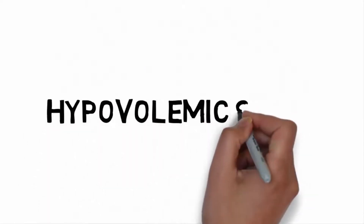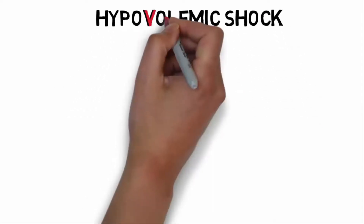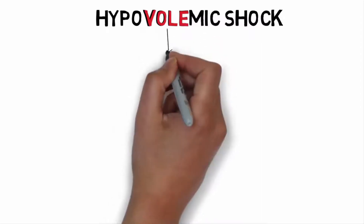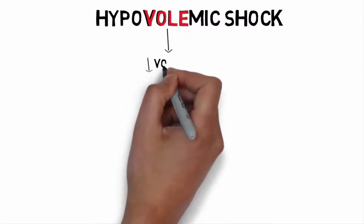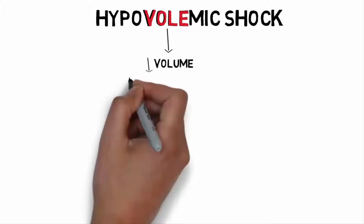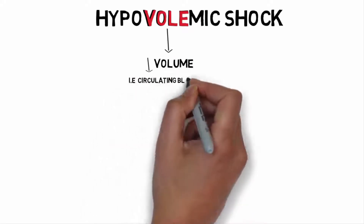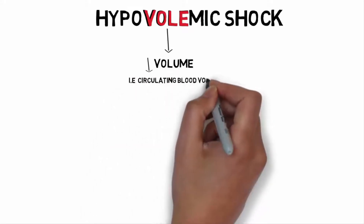Hypovolemic shock is one of the 5 types we discussed in the previous video. As the name represents, it is due to reduction in volume — in other words, decreased circulating blood volume.